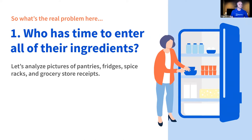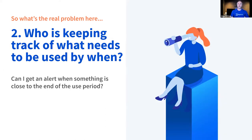The API could analyze pictures of things like pantries, fridges, spice racks, and receipts from the grocery store. I could take a picture and it would know everything I bought and keep track of what I have on hand. I also need to know who's keeping track of what needs to be used by when, because I hate when something goes bad. I'd like to get alerts before something goes bad so I can prioritize that.